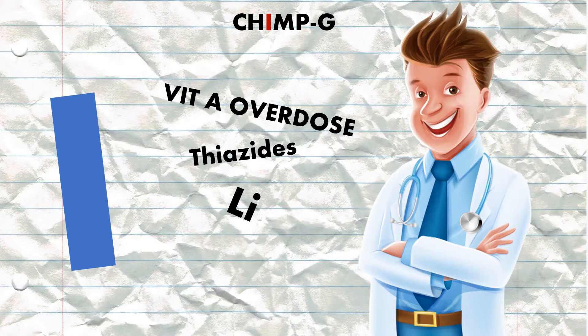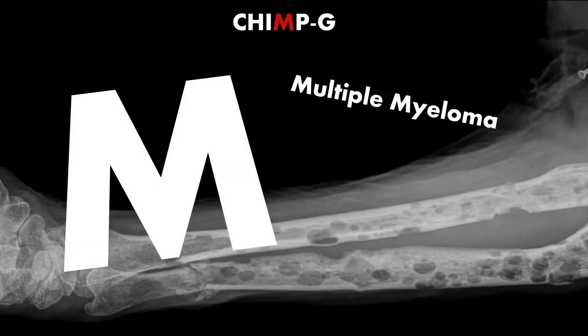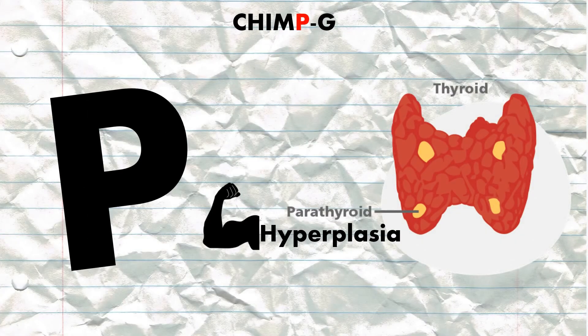M is for multiple myeloma — another cancer — where, because of the damage caused to the bones, it results in elevated calcium levels. P is for hyperparathyroidism, and is one of the most common causes.